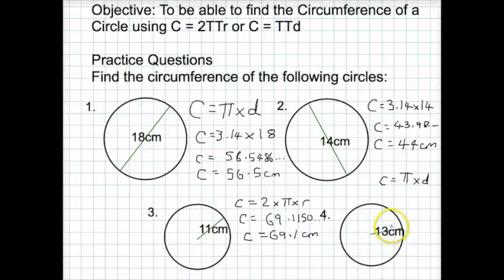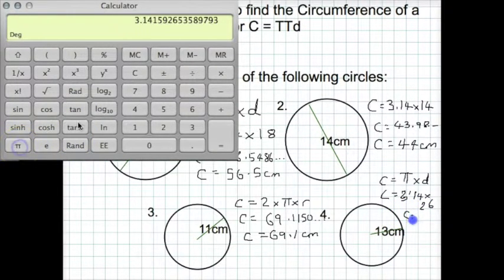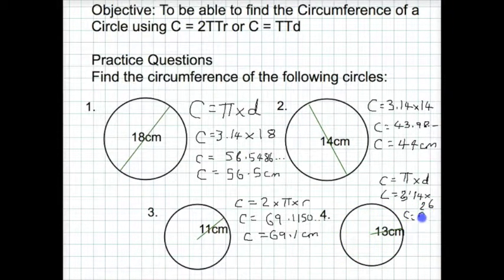So I'm going to type in my calculator, C equals π, 3.14 times 26. That's going to give us an answer on our calculator of 81.68, which rounds to circumference equals 81.7 centimeters.